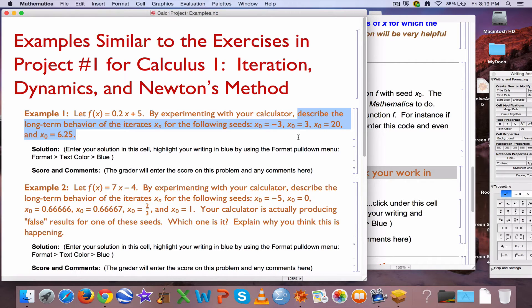The directions say to describe the long-term behavior of the iterates, in other words what happens with this orbit, this dynamical motion of the points along a number line, for different seeds, different starting values, negative 3, 3, 20, and 6.25.